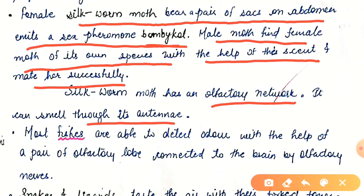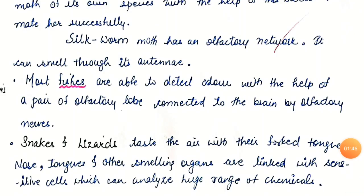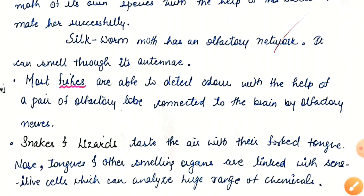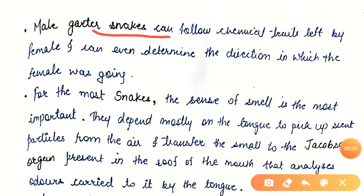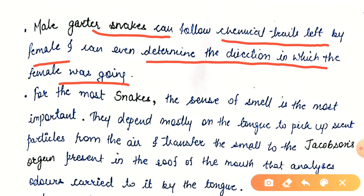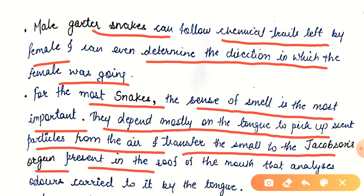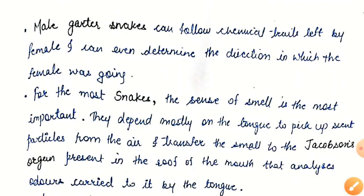In most fishes, they are able to detect odor with the help of a pair of olfactory lobes connected to the brain by olfactory nerves. In snakes and lizards, they taste the air with their forked tongue. Nose, tongue, and other smelling organs are linked with sensitive cells which analyze a huge range of chemicals. Male garter snakes can follow chemical trails left by females and can even determine the direction in which the female was going. For most of these snakes, the sense of smell is most important and they depend mostly on their tongue to pick up scent particles from the air.